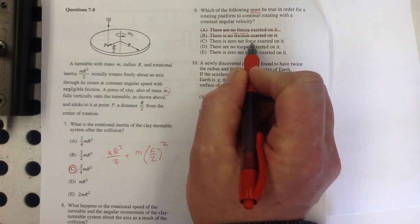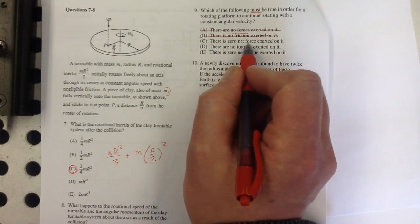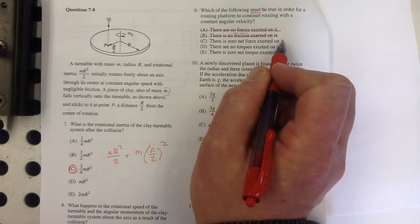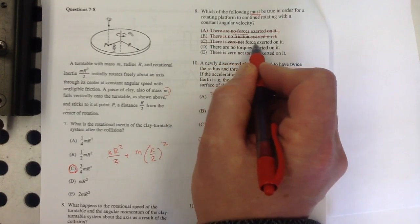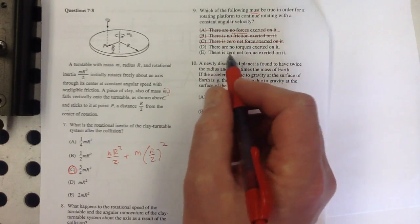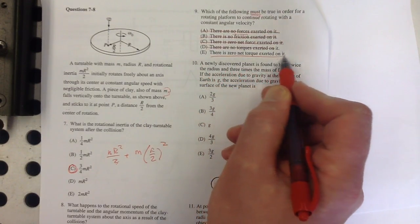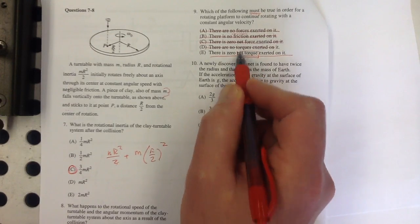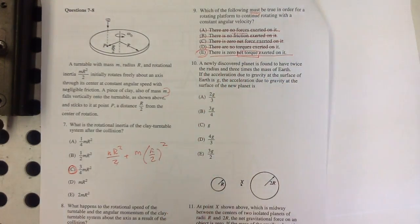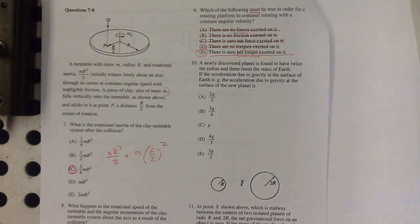There is zero net force exerted on it? That's not necessarily true either. We just need the net torque to be zero. There are no torques? No, there could be balanced torques. So there is zero net torque. That's the key. Zero net torque. If there is net torque, that would cause angular acceleration.